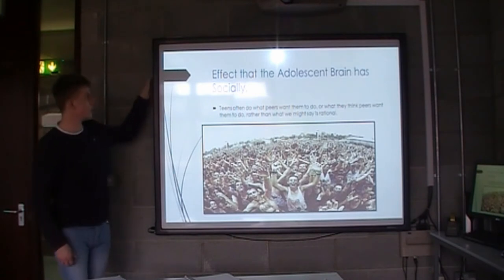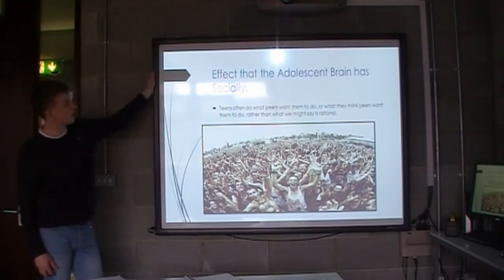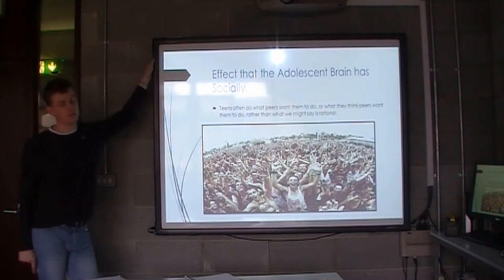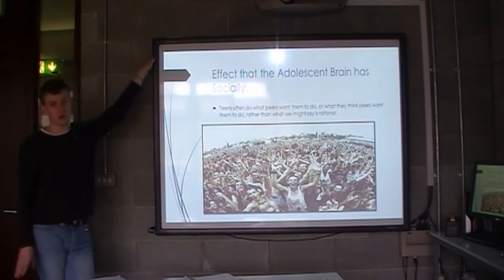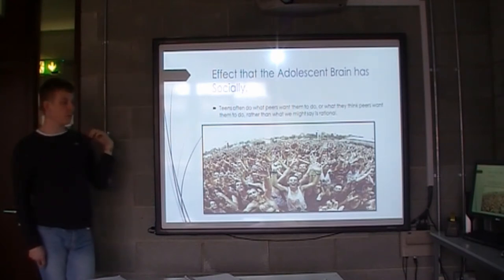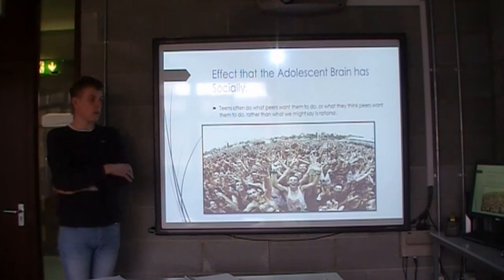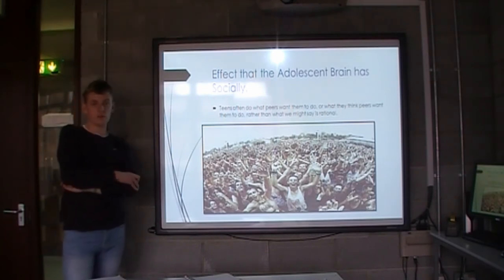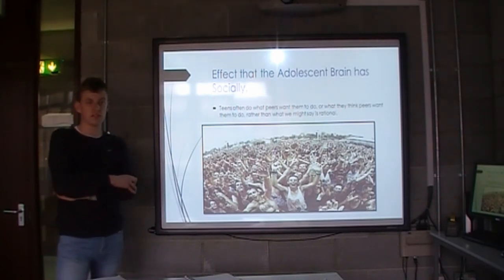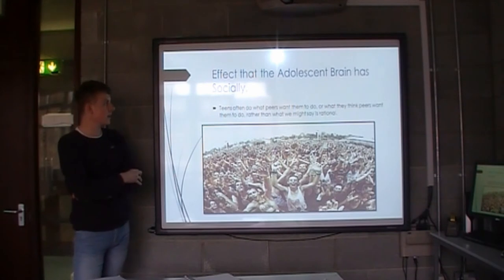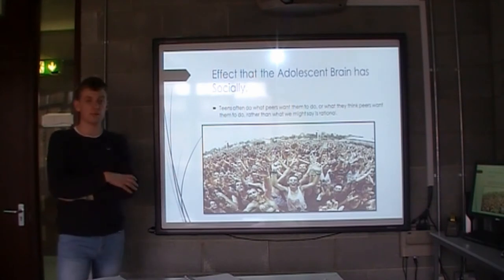I am talking about how the adolescent brain affects us socially. Teenagers often act differently when they are in front of a social crowd compared to how they are at home. For example, many teenagers in front of a crowd might jump off a tall building, and while this seems dangerous, to them it feels cool and their brain doesn't process it properly. This is mainly how the adolescent brain affects people socially.